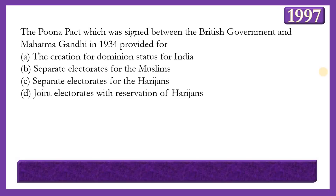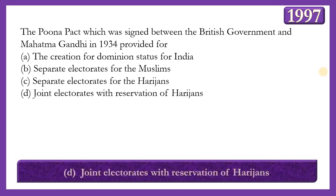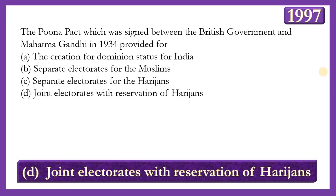Next question: The Poona Pact, signed between the British government and Mahatma Gandhi in 1932, provided for? Options: dominion status for India; separate electorates for Muslims; separate electorates for Harijans; or joint electorates with reservation of seats for Harijans. The answer is option D — joint electorates with reservations of seats for Harijans. This pact was signed between Dr. B.R. Ambedkar and Mahatma Gandhi in 1932.